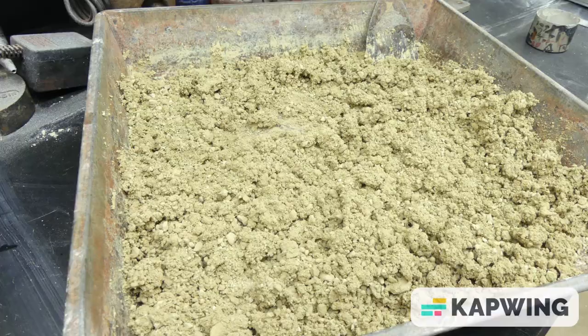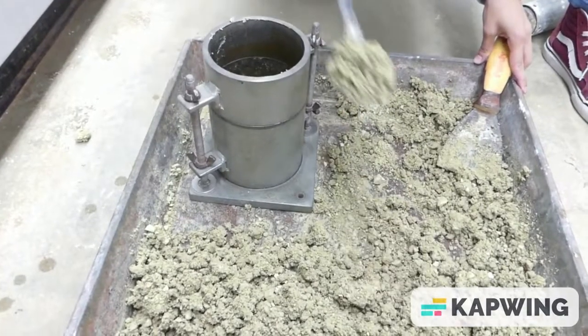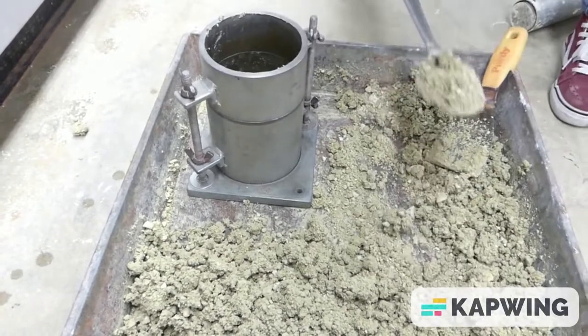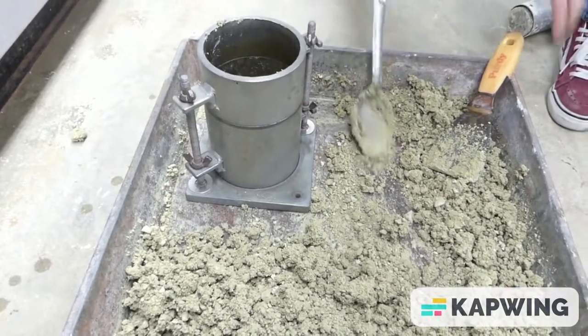Once you are done, you can now begin to fill your compaction mold. You will compact the soil into three layers. Keep in mind the soil you are using. Some soils may require the layers to be thicker than others.